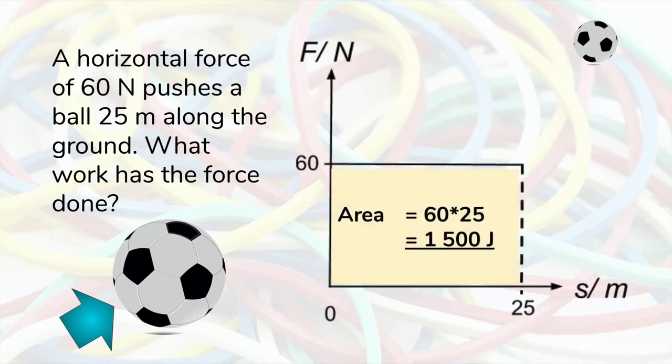If you draw the graph of F against S, then the area of the rectangle under the graph calculated by force times distance gives the value of the work done, 1500 joules.